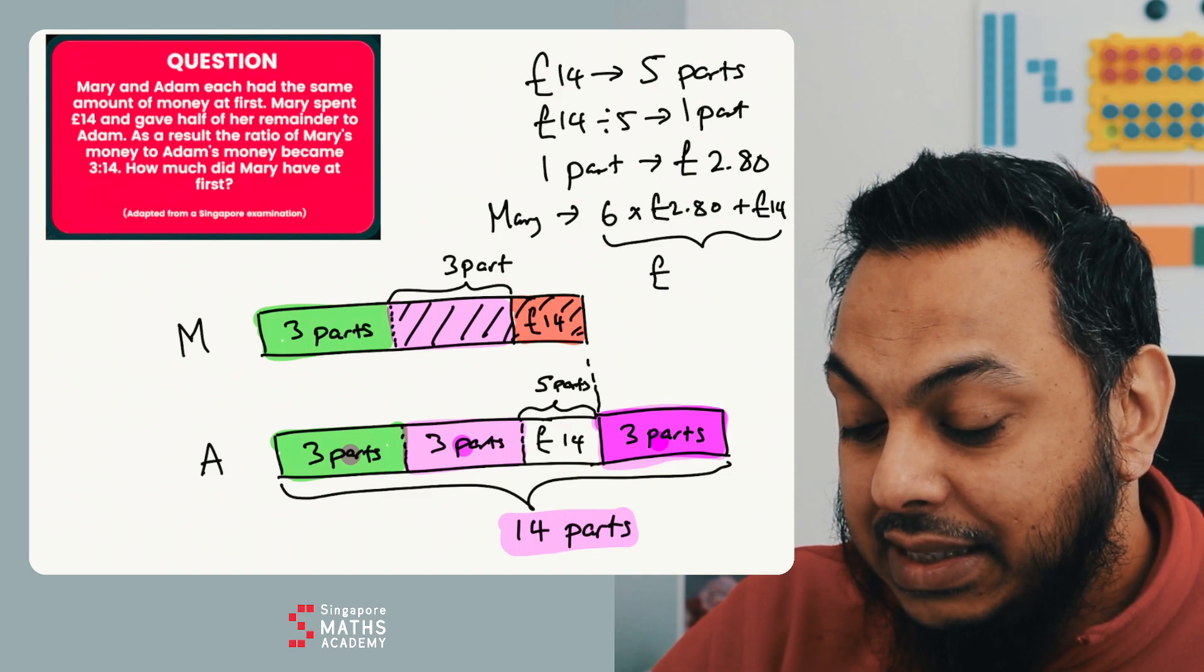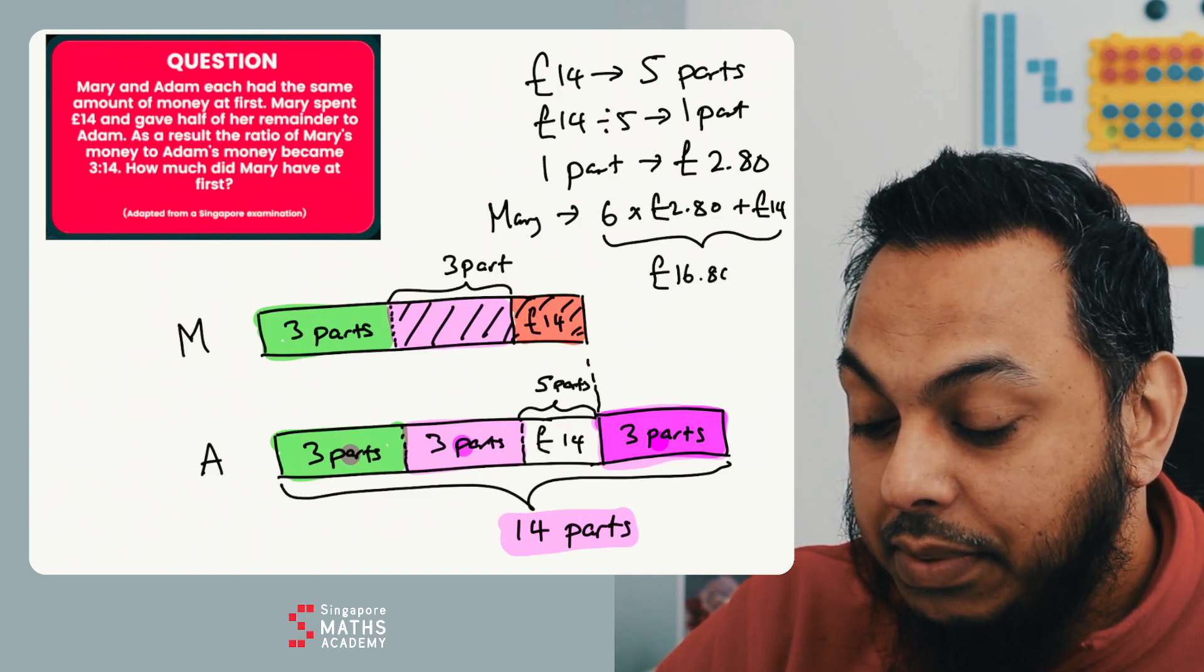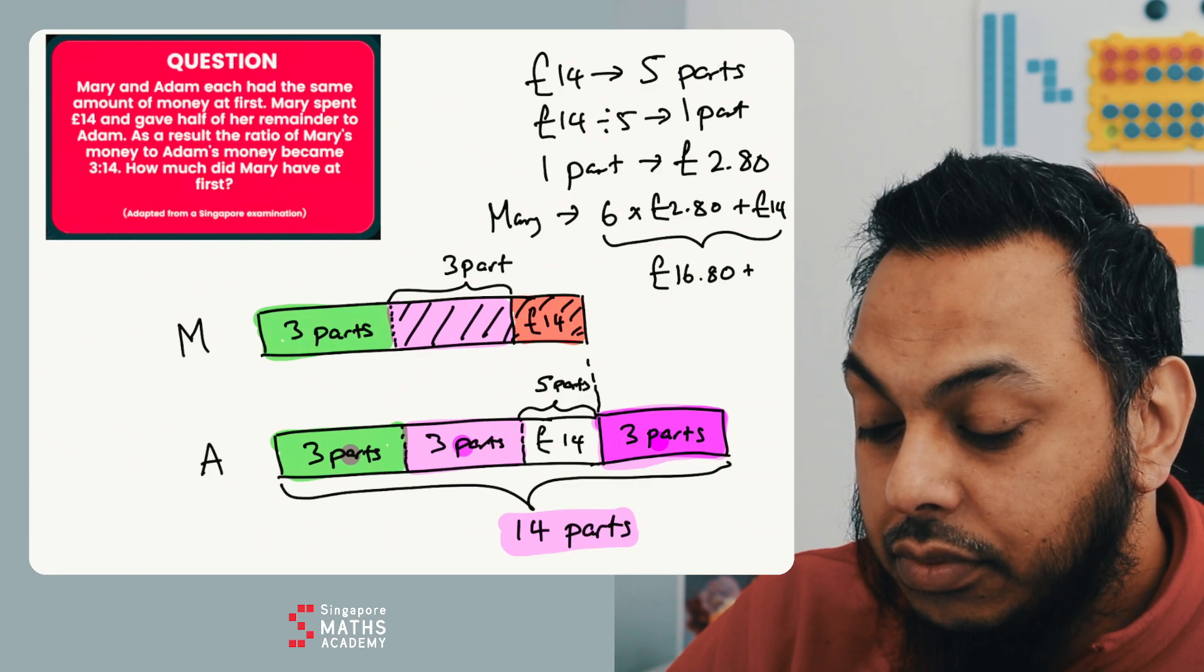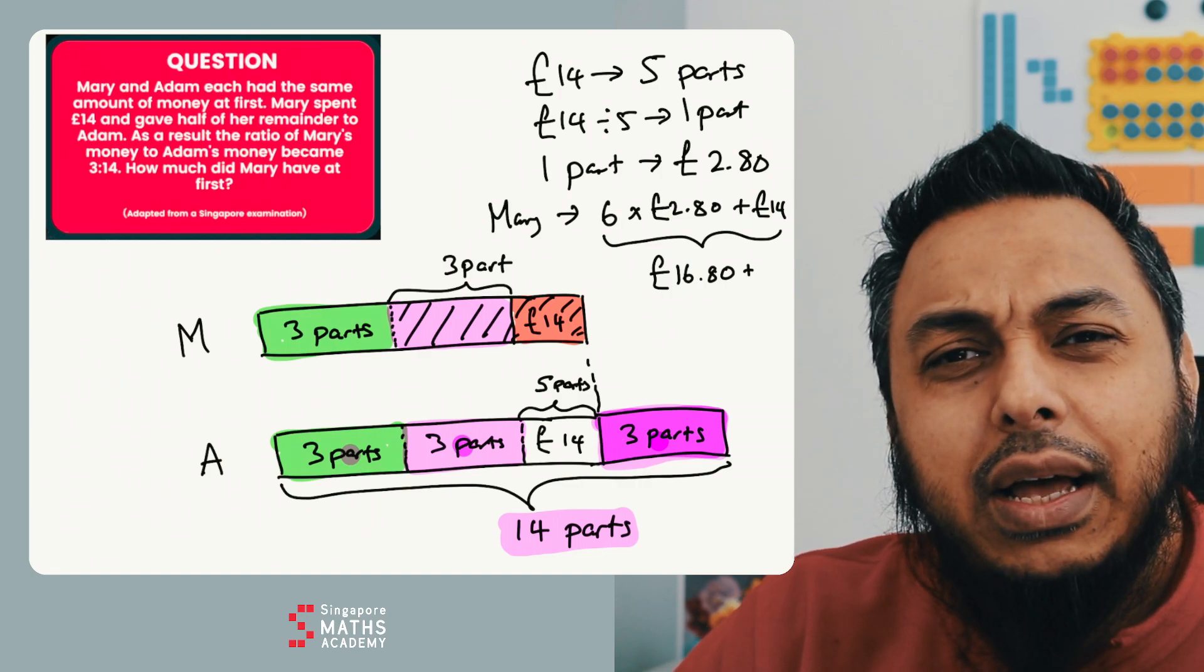£12 add £4.80 is £16.80, plus the £14, and so altogether that makes £30.80.